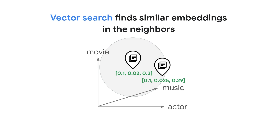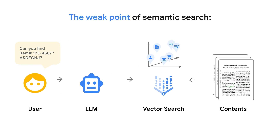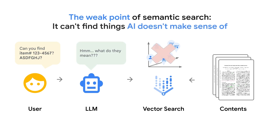While semantic search is powerful at finding text by meaning, it does have a weak point. It excels at understanding the meaning and context of words, but it can struggle with information that falls out of domain — essentially data the embedding model hasn't been trained on. So if you're searching for something like a specific product number, a brand new product name, or an internal company codename, semantic search might come up empty.